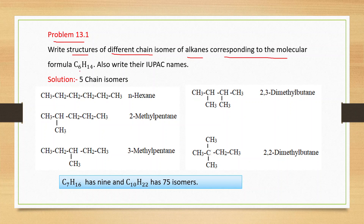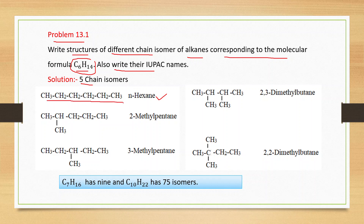Now, Problem 13.1: write structures of different chain isomers of alkanes corresponding to the molecular formula C6H14, and also write their IUPAC names. This formula has five chain isomers. The first one is normal hexane — six carbon atoms in the parent chain. Then the number of carbon atoms decreases: five carbon atoms in the parent chain with the sixth carbon atom as a branch.